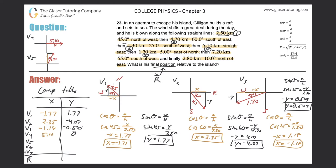For V5, the y-component is the adjacent side and the x-component is the opposite side relative to the 5° angle. So x equals sine of 5° times 1.7, giving 0.148. And y equals cosine of 5° times 1.7, giving 1.69. Enter 0.148 for x and 1.69 for y in the table for V5.